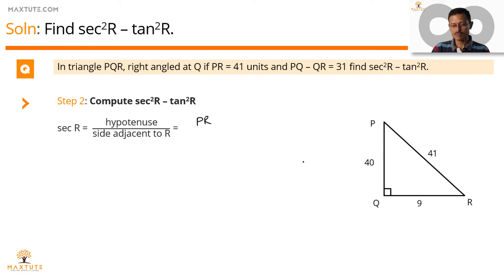Hypotenuse is PR. This is angle R. Side adjacent to angle R is equal to QR. So PR by QR is the value of secant R. PR equals 41, QR equals 9. So secant R is equal to 41 by 9.